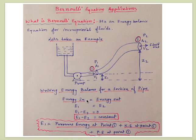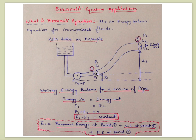Energy balance means energy in equals energy out. We assume there is no accumulation of fluid inside the pipe, so energy in equals energy out. We represent energy in as E1 and energy out as E2, giving us E1 minus E2 equals zero, or constant.